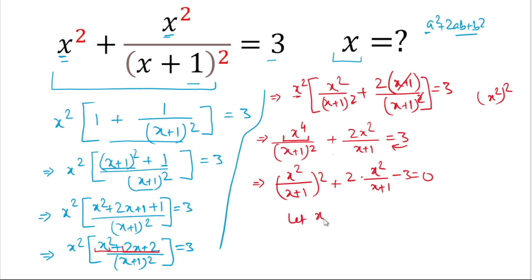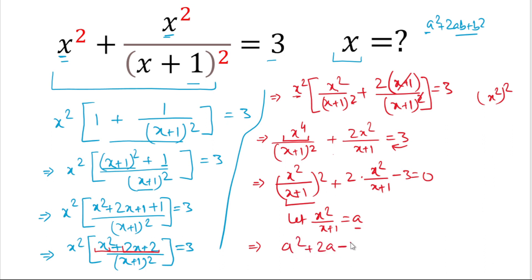Now we let a = x²/(x+1). Substituting, our new equation becomes a² + 2a − 3 = 0. We will solve this quadratic equation in the next step.